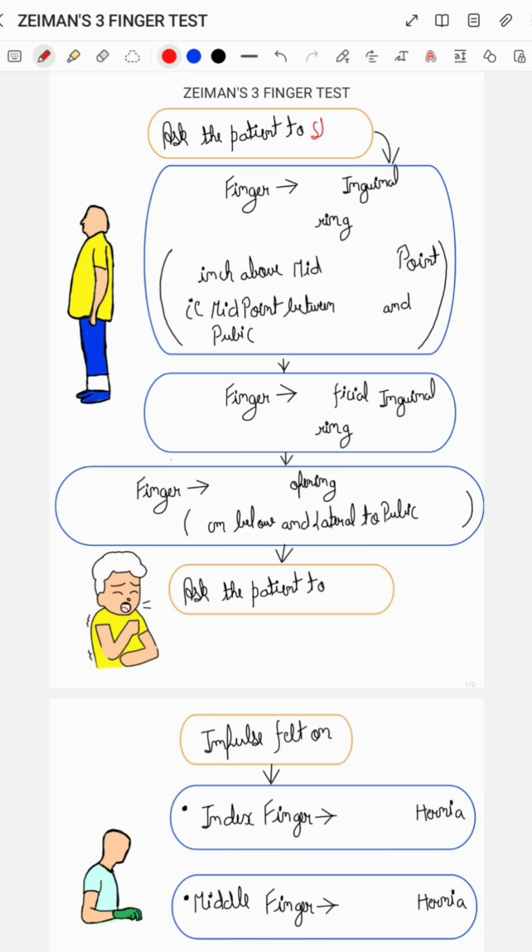Ask the patient to stand. Place your index finger over the deep inguinal ring, which is 0.5 inches above the mid-inguinal point, that is the midpoint between the anterior superior iliac spine and pubic symphysis.